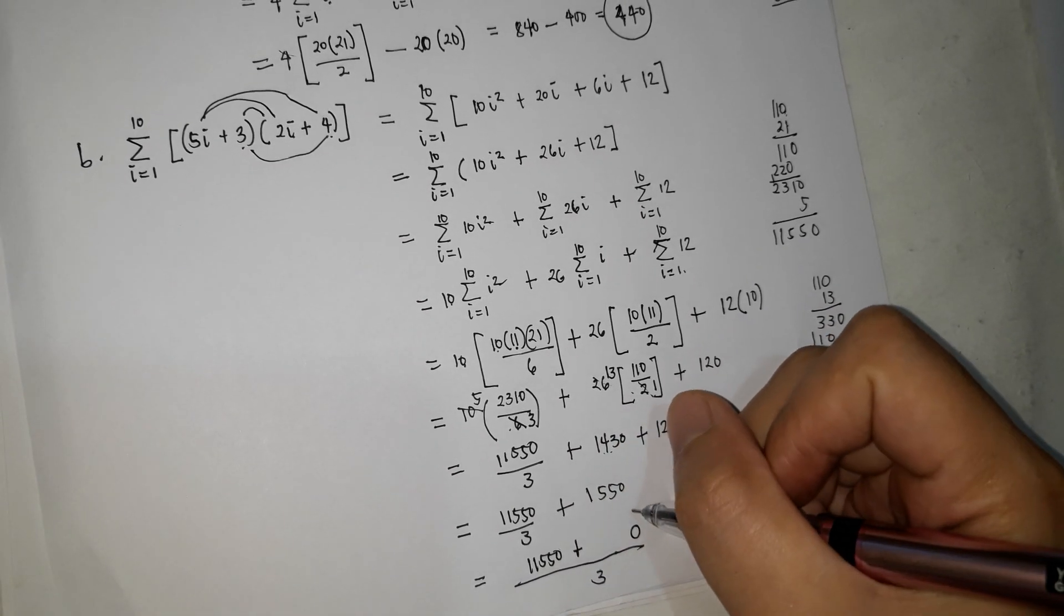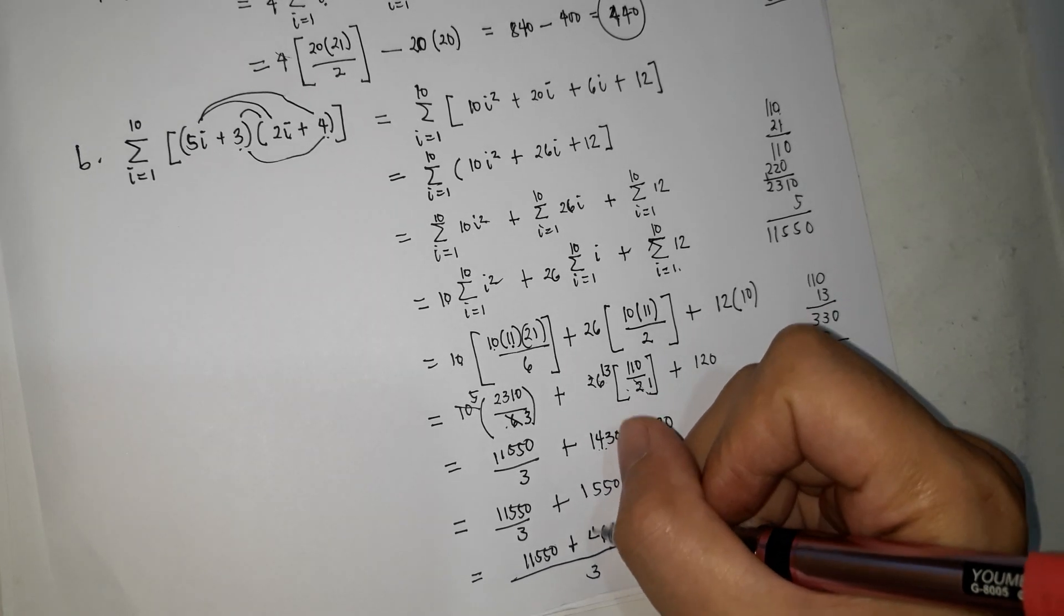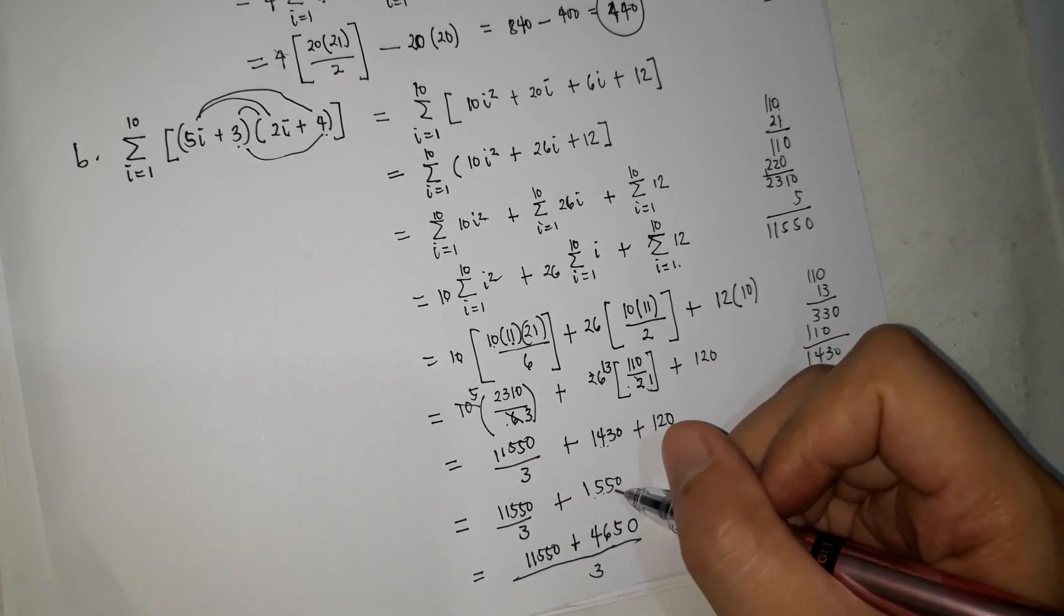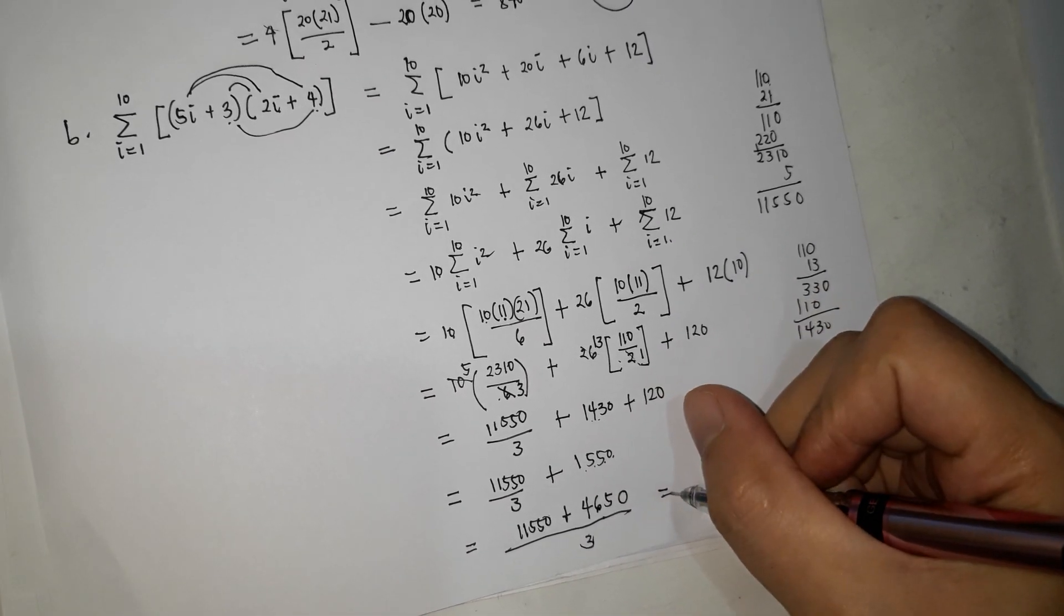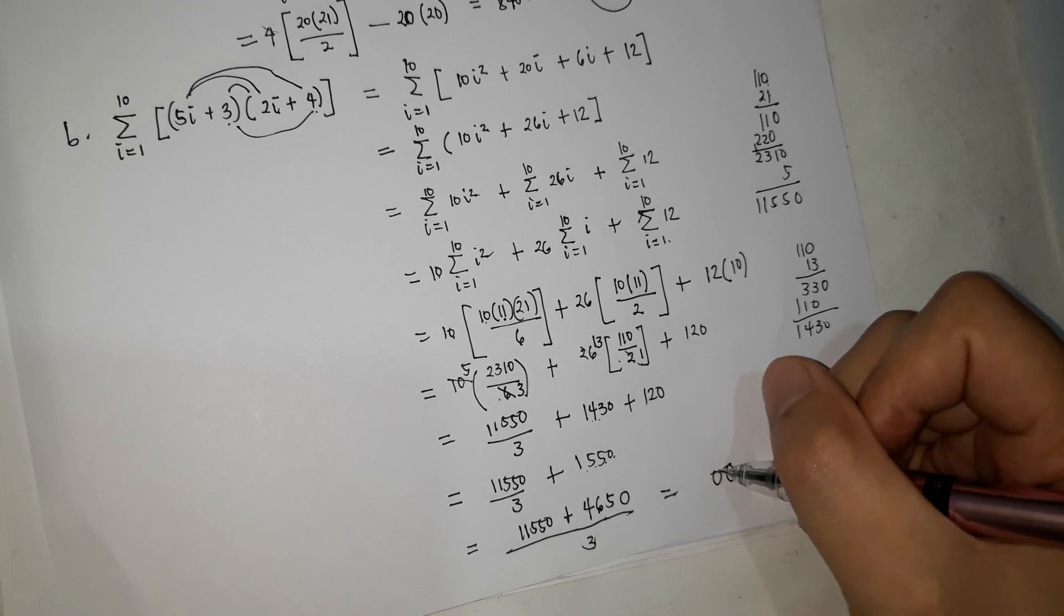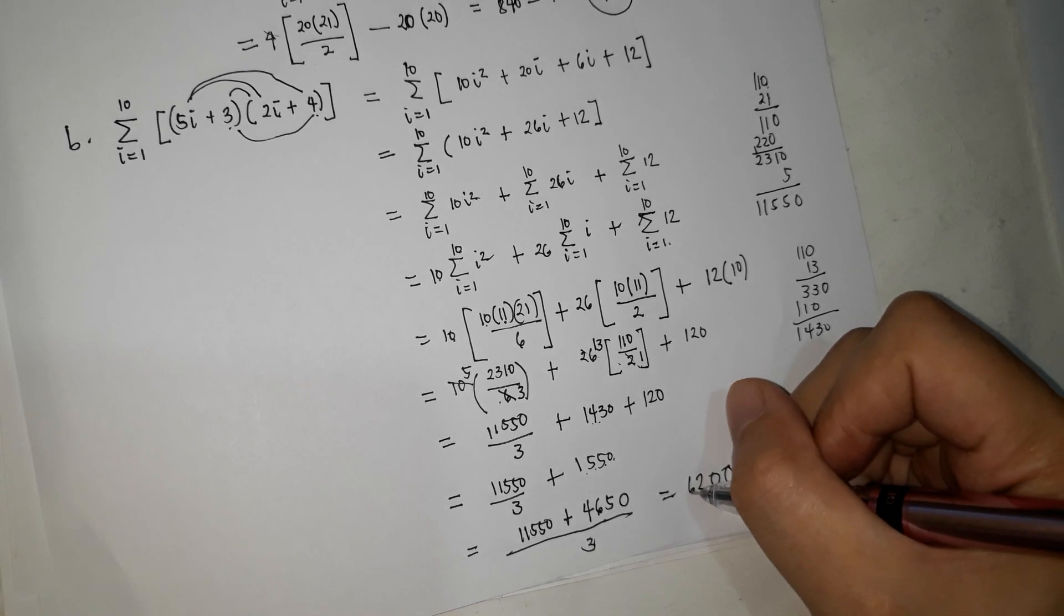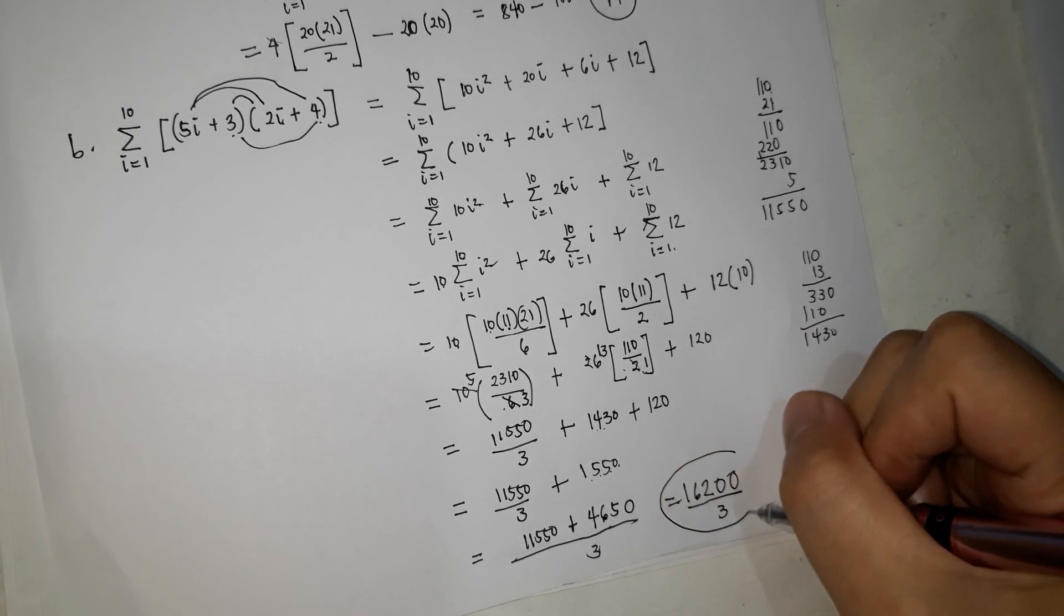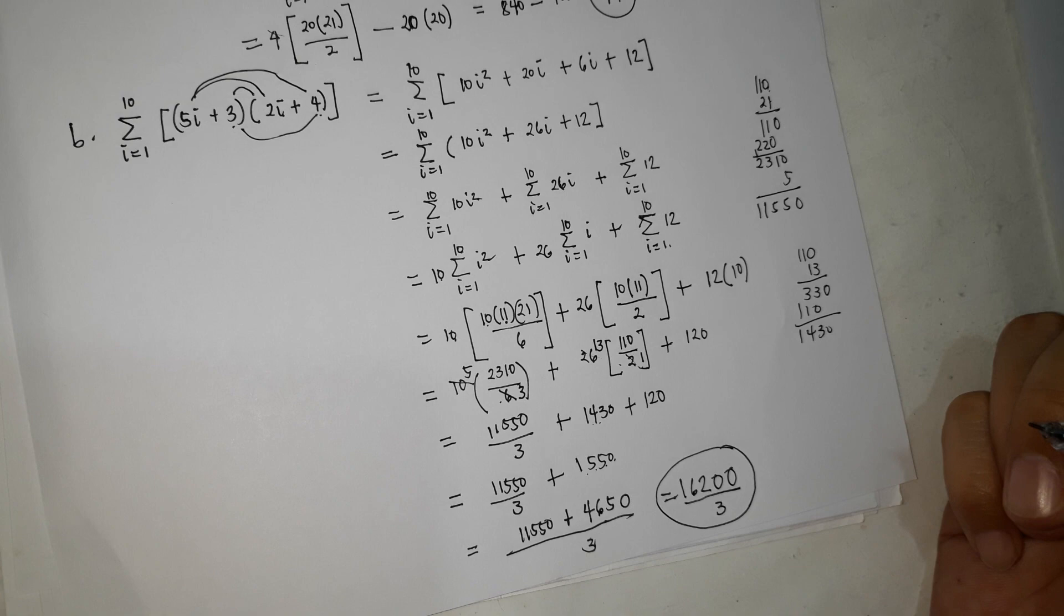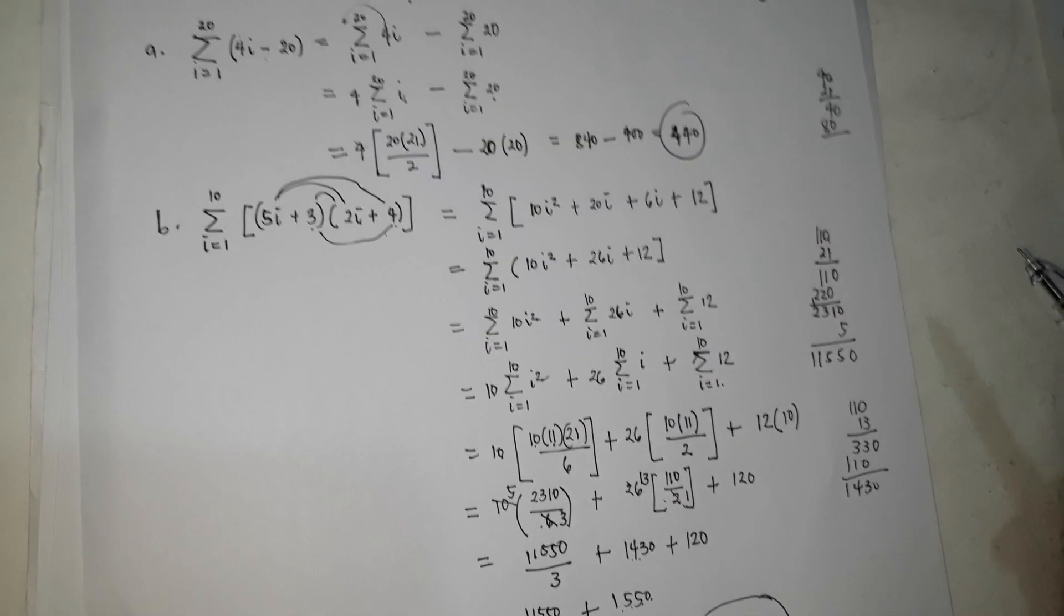Tapos, ito, i-times mo, it's 5, 5, 16, carry 1, 4. So pag 1550 i-times mo ng 3. So kung i-plus mo yan sila, 0, 10, carry 1, 12, carry 1, 6, 1, 3. So this is the answer for this sigma notation. I hope we are right.